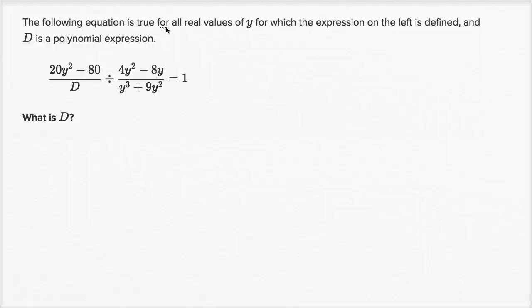We're told the following equation is true for all real values of y, for which the expression on the left is defined, and d is a polynomial expression. And they have this equation here. What is d? Alright. So essentially what they're saying is, they don't want us to somehow solve this equation, they're saying d is going to be some type of a polynomial expression.